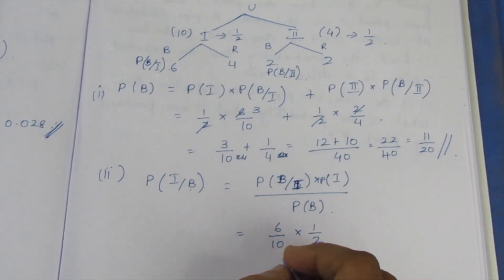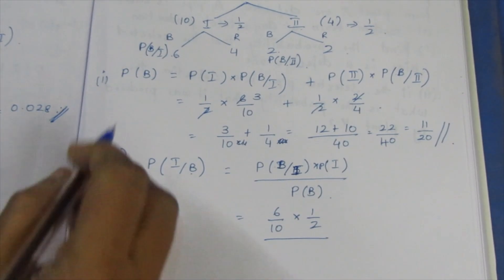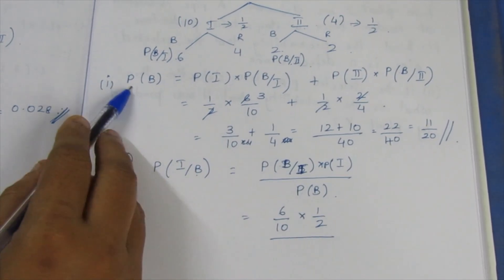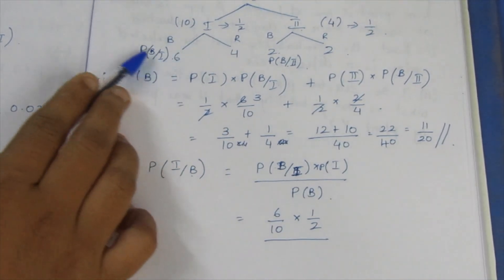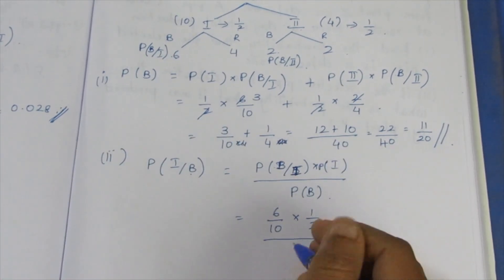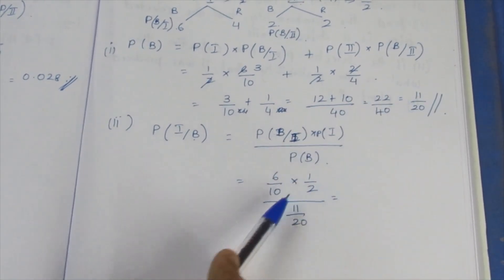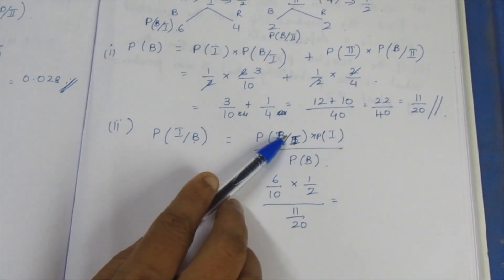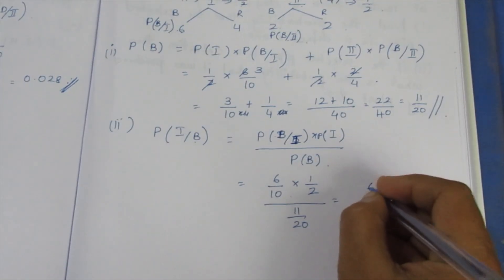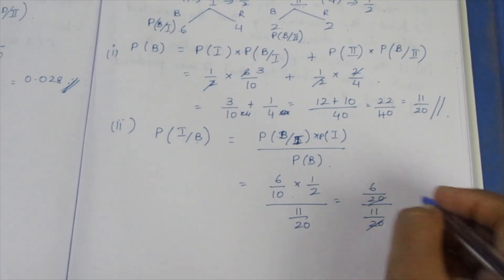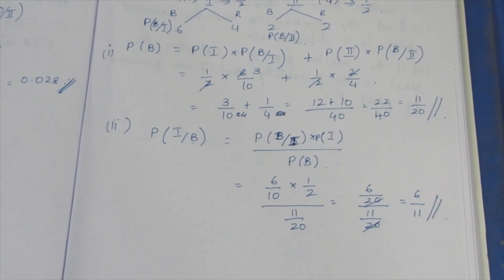The probability of a black ball is 6/10 into 1/2. We divide by the total probability of black, P(B), which is 11/20. Substituting, we cancel the 20, giving 6/20 divided by 11/20, which simplifies to 6/11. So 6/11 is the answer to the second subdivision. Thank you.